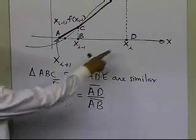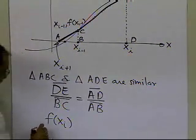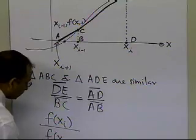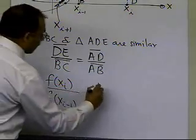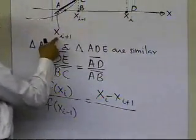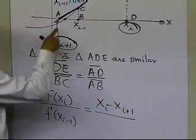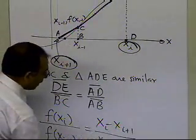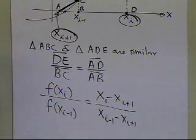So what is DE? The length DE is nothing but the value of the function at x_i. And what is BC? BC is nothing but the value of the function at x_{i-1}. What is the length AD? The length AD is x_i minus x_{i+1}, because D is x_i and A is x_{i+1}. And AB, which is this length, is the difference x_{i-1} minus x_{i+1}.